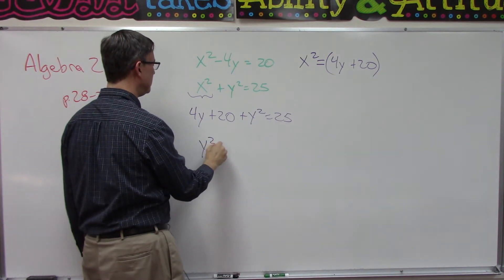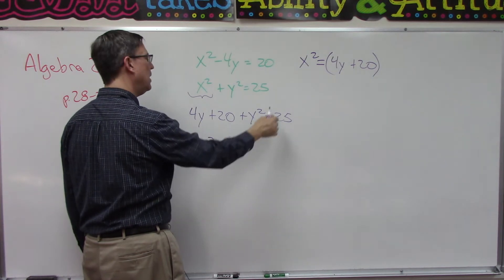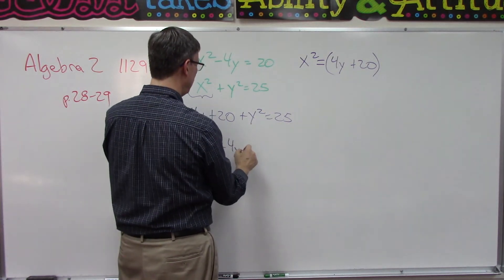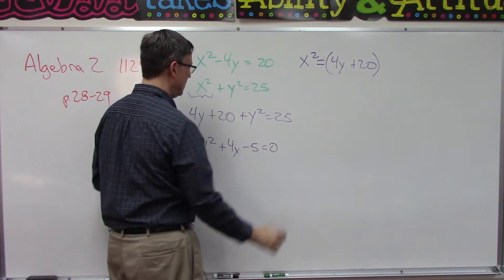See what we did? This is still here, the 25 is still here. We replaced the x squared with 4y plus 20. All right, now I'm going to put the y squared term first and then plus the 4y. I'm going to bring the 25 over which makes it negative 25, so minus 5 equals 0.